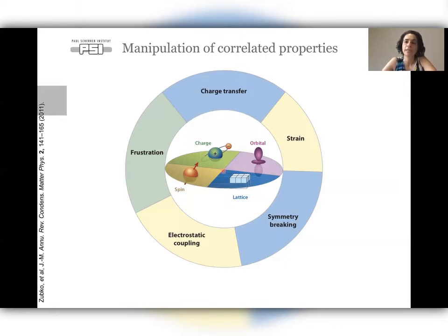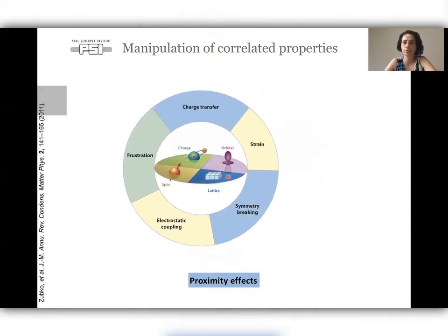If you grow these correlated systems in thin films, you can try to control these orders by strain, for example. Or if you do a heterostructure, you can try to tune these properties through the interface, for example, by symmetry breaking or by charge transfer. Here we have used proximity effects. So we have used the heterostructure to bring a proximity layer to one of the systems and therefore tune its properties.